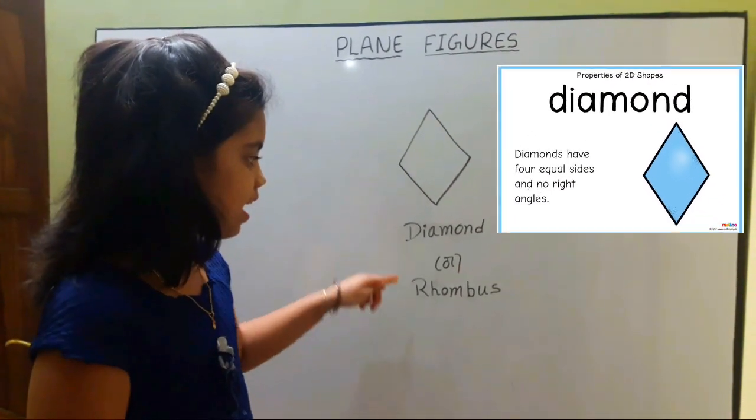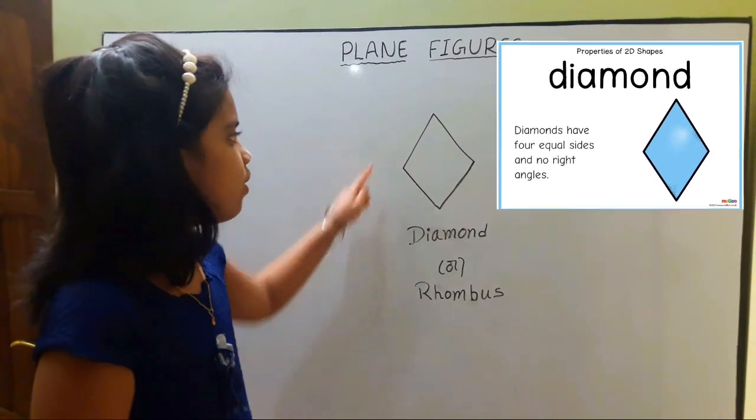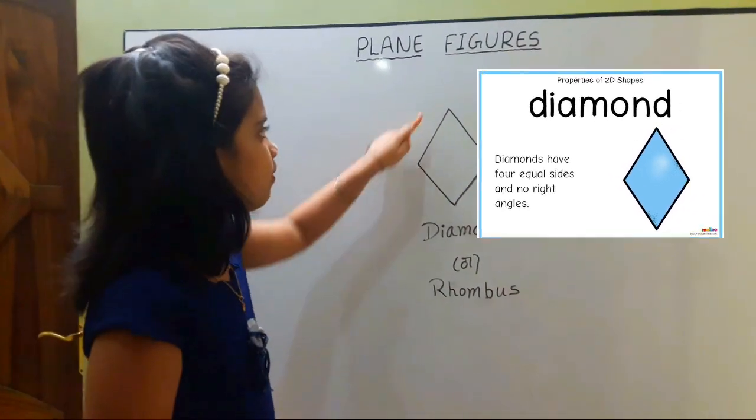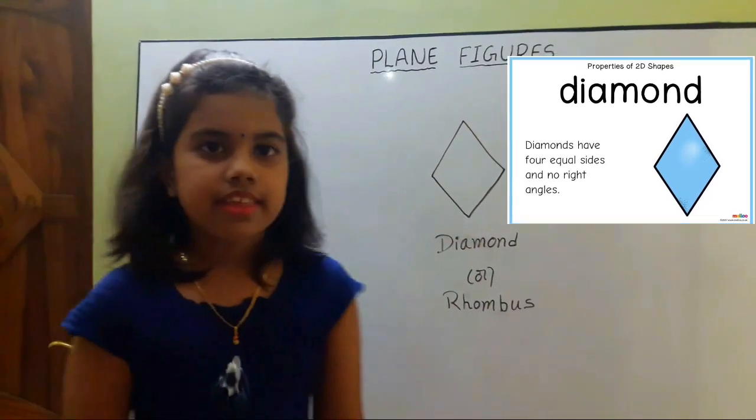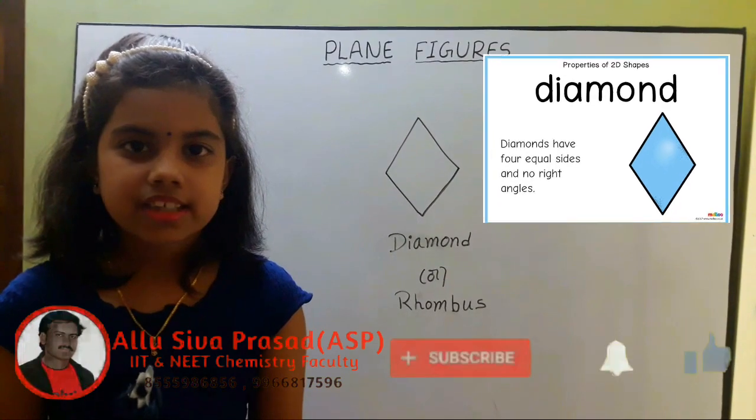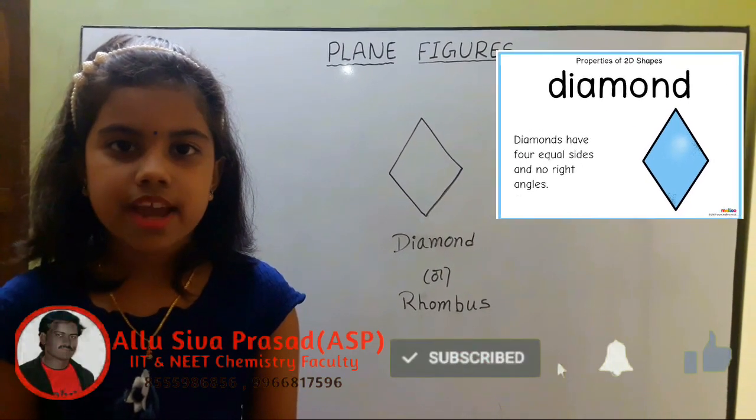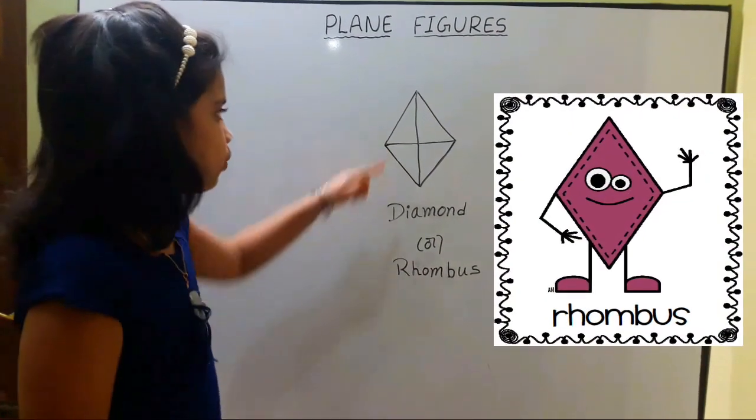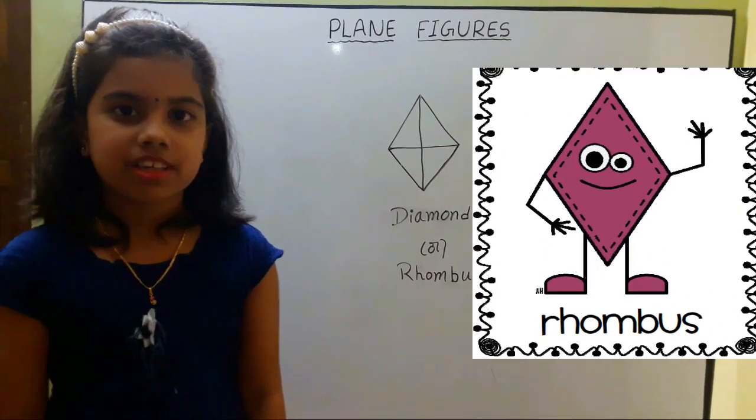Next one is diamond or rhombus. It has four sides in equal measure and four vertices. The area enclosed inside the diamond is called region of diamond rhombus. It has two diagonals in different measures.